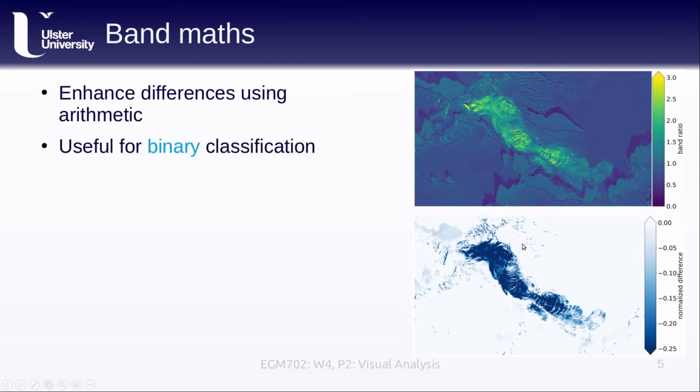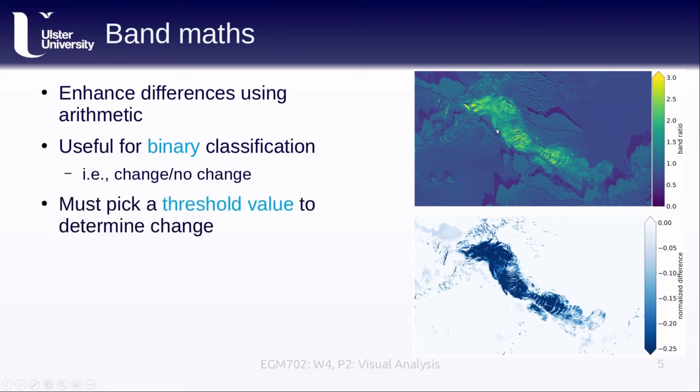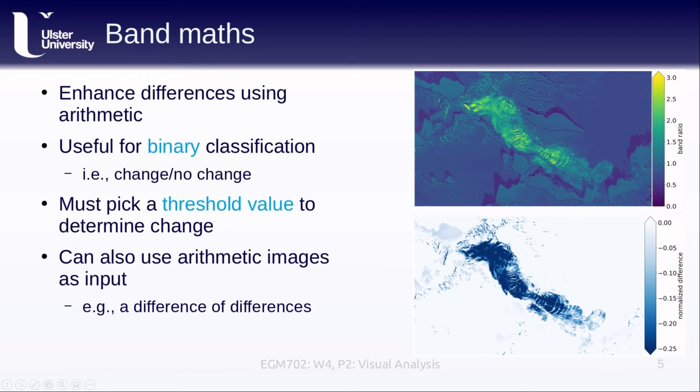This kind of analysis is very useful for something called binary change classification or where we're trying to identify areas where there has been no change in the image and compare that to areas where we definitely are seeing change. Usually to do this, we pick a threshold value or multiple threshold values in order to classify or distinguish between change and no change pixels. We can also use arithmetic images as an input. For example, we could look at a difference of differences or a ratio of differences in order to try to enhance the changes even more.